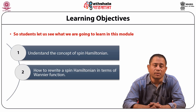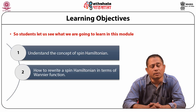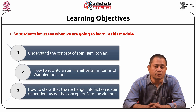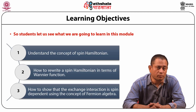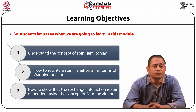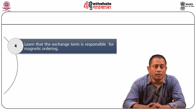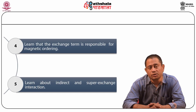The second topic is how to rewrite a spin Hamiltonian in terms of Wannier functions. Wannier functions are a special kind of functions used to describe tight binding approximate models. Third, you will learn how to show that the exchange interaction is spin dependent using the concept of fermion algebra. This exchange interaction is very special in magnetism and helps us understand what exactly magnetism is. We will also learn about indirect and super exchange interactions.